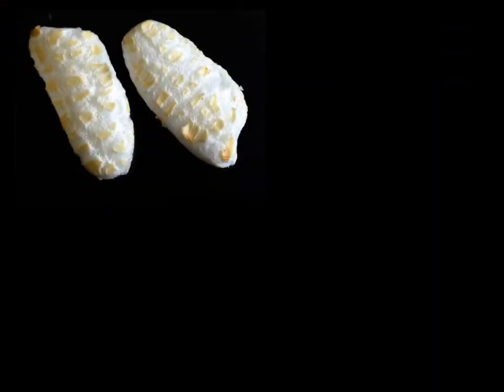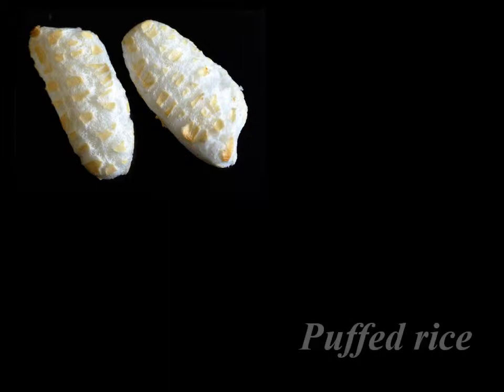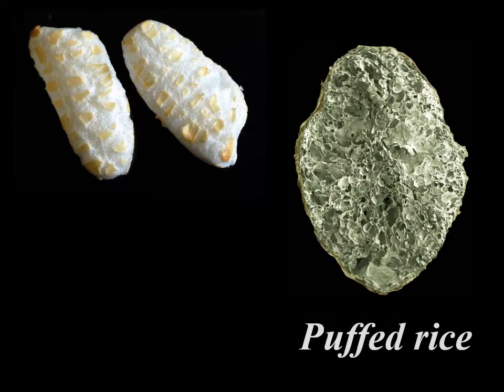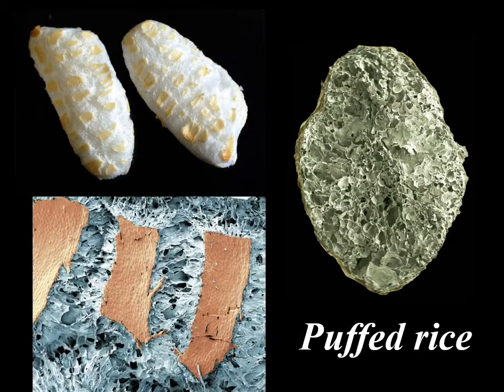Similar to popcorn, puffed rice is made from rice grains expanded quickly by the conversion of their moisture content into water vapor. The puffed grains have a foam-like internal structure consisting of small air cells. When a grain expands by the developing steam, its seed coat breaks into small fragments like tiles which float on the puffed grain. Unlike popcorn, rice grains do not contain enough moisture to be successfully popped at home. Rice is therefore processed in industrial settings at high pressure with steam. A sudden release of the pressure ensures that the grains do not disintegrate but become fluffy.